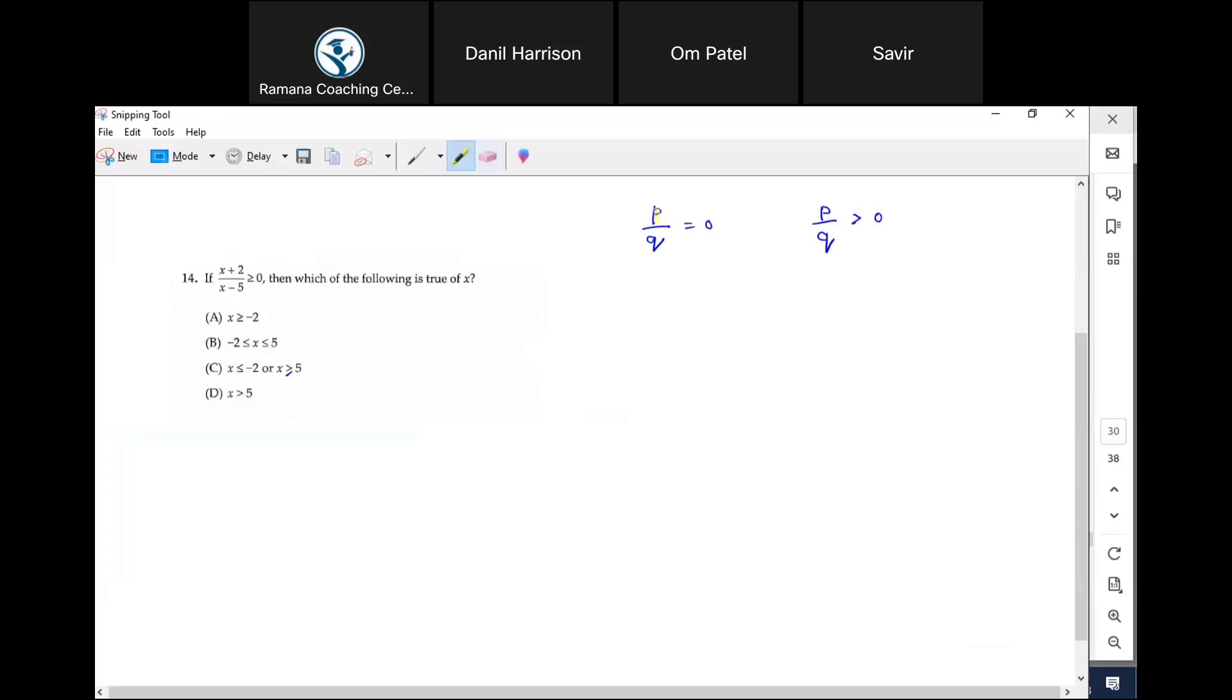When would a fraction become zero? When the numerator becomes zero, correct. The denominator should never be five because if the denominator is five, the fraction becomes undefined. So that means your x can be negative two, agree? Okay, so I am covered there.